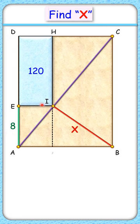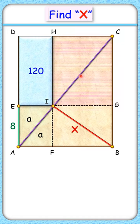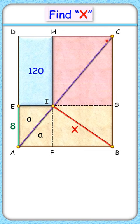Let's extend HI and EI. Now in this green rectangle AI is diagonal and thus these areas will be equal. In this pink rectangle again IC is the diagonal, thus these areas will be equal.